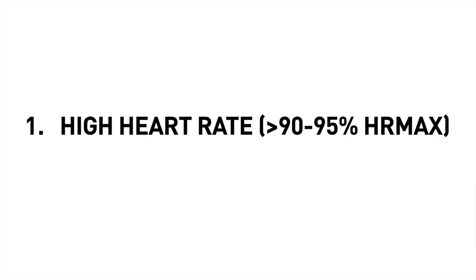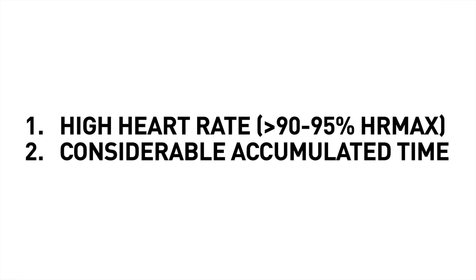There are two main objectives we'll want to achieve for an effective VO2 max workout. The first is to reach a high heart rate — meaning upwards of 90 to 95 plus percent of heart rate max — which will push the heart muscle to contract at a maximal force, driving a high stretching and elastic recoil. Secondly, we want to achieve a considerable accumulated training time in this elevated heart rate range in order to provide a large stimulus for adaptation. It's no good going as hard as possible and only spending mere seconds in this high heart rate range.